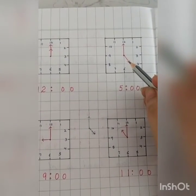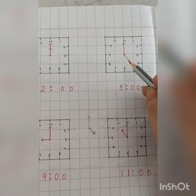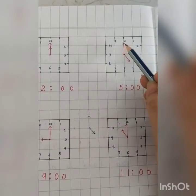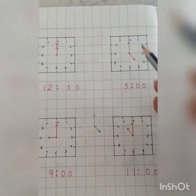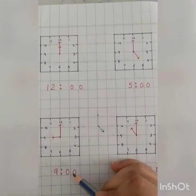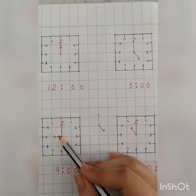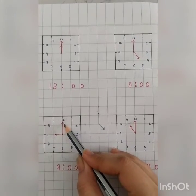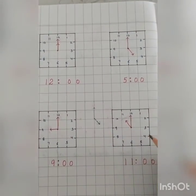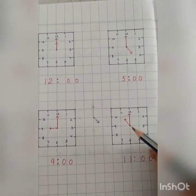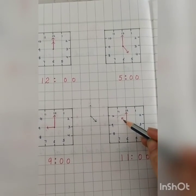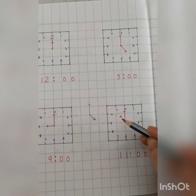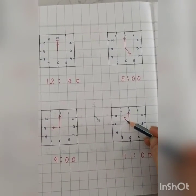Then five o'clock — the hour hand, the small hand, is at five, and the long hand, the minute hand, is at twelve. Similarly, nine o'clock — small hand is at nine and the big hand is at twelve. And eleven o'clock — small hand is at eleven and big hand is at twelve. So the time is eleven o'clock.